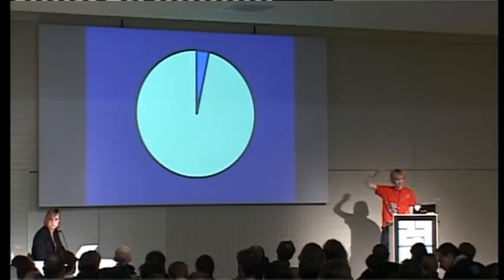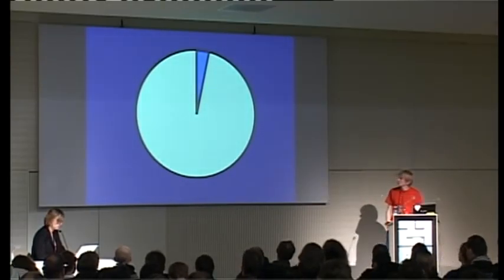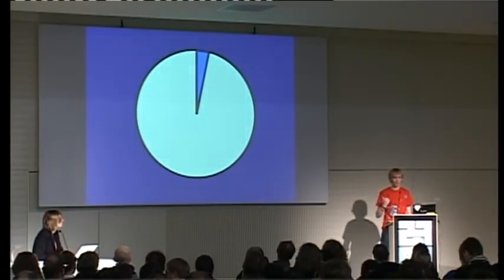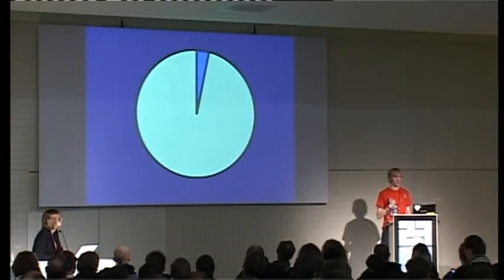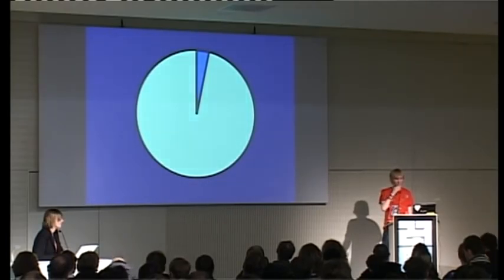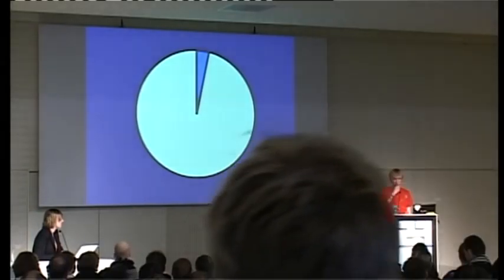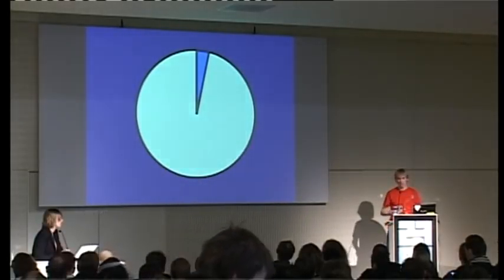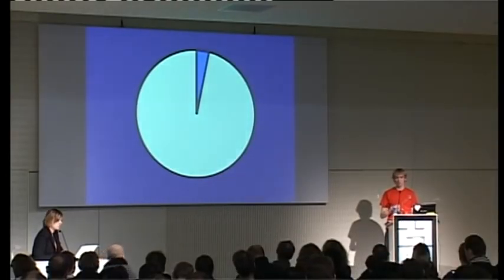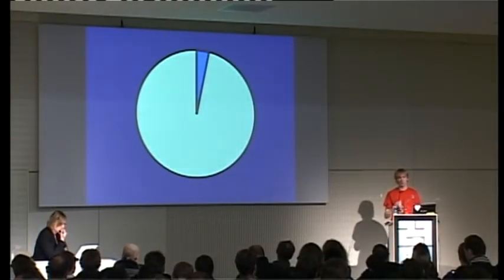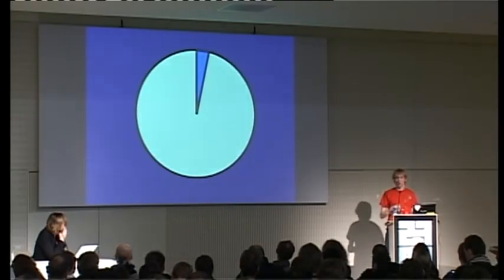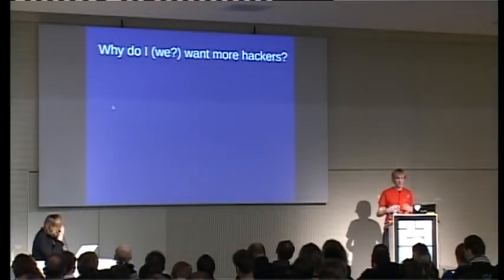Looking at this room, we're definitely in that really small piece of this highly accurate pie chart. But if you think about that pie chart as the world's population, this is grossly exaggerated as the number of hackers in our community and population. And I see this as a problem, because it means that we aren't always thought of when we're trying to do things and work with other people. People don't really see why hacking something is good.